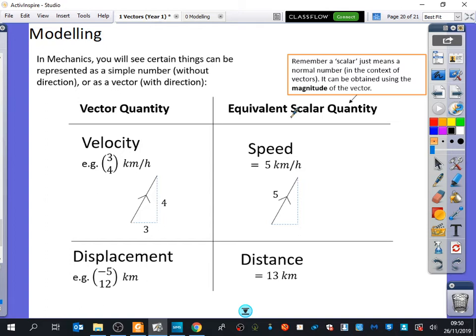The vector quantity we would say is velocity, which we might say here is (3, 4) kilometers per hour. That means every hour it is moving 3 kilometers to the right, 4 kilometers up. So overall, it's making that kind of diagonal motion. The speed, though, we would do the magnitude of (3, 4).